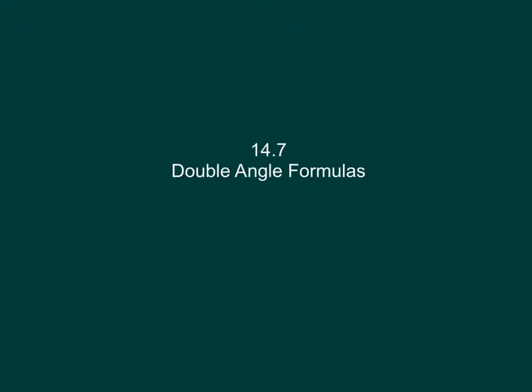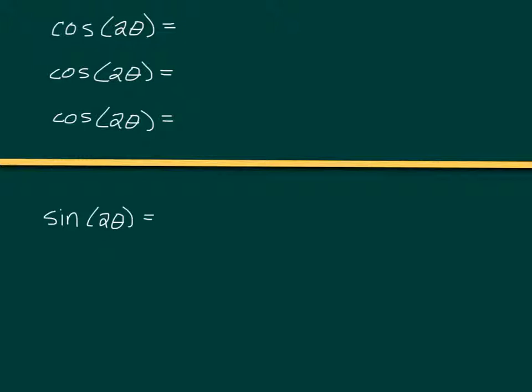We're going to do double angle formulas today. Yesterday we did sum and difference formulas. Those are going to help us see why the double angle formulas are what they are. So, cosine 2θ, as you guys could probably guess, is going to have three different forms. Sine 2θ is only going to have the one form. But what are they?